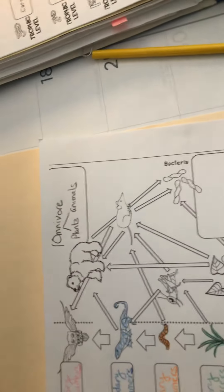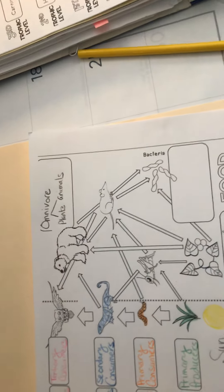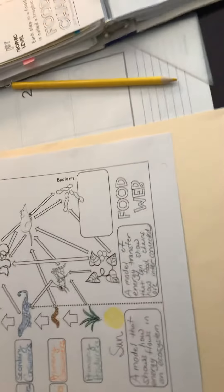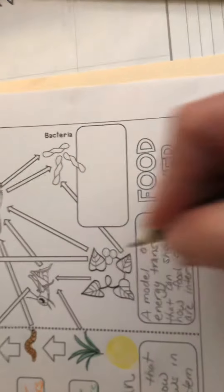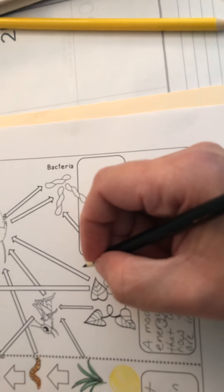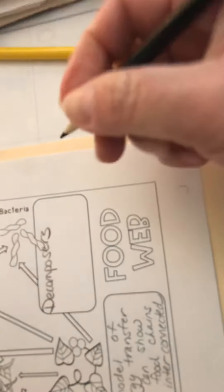And then the last thing in this food web that we want to make sure we define here is this last one, which would be decomposers. Decomposers eat dead plant and animal material; they break it apart for us.